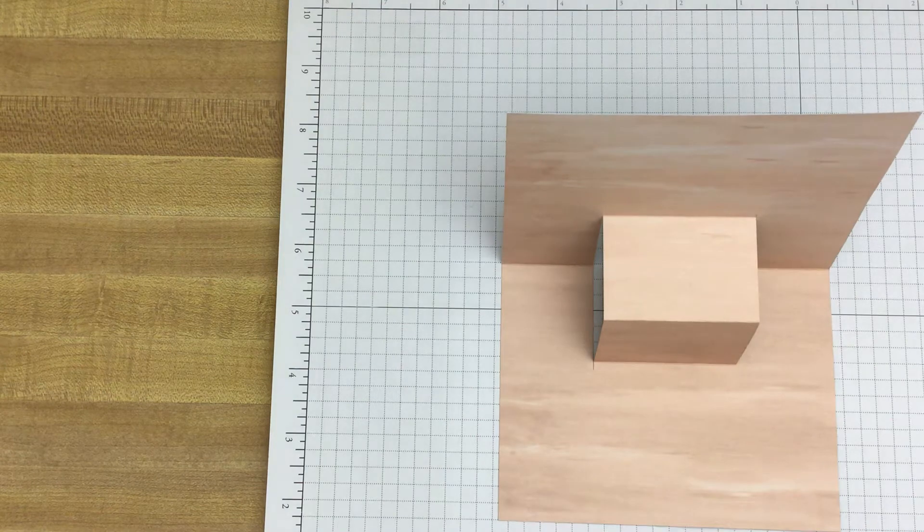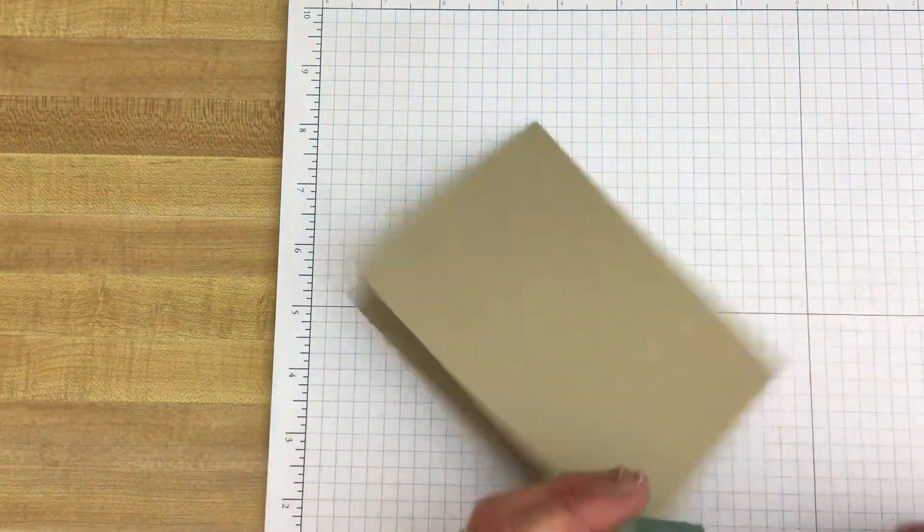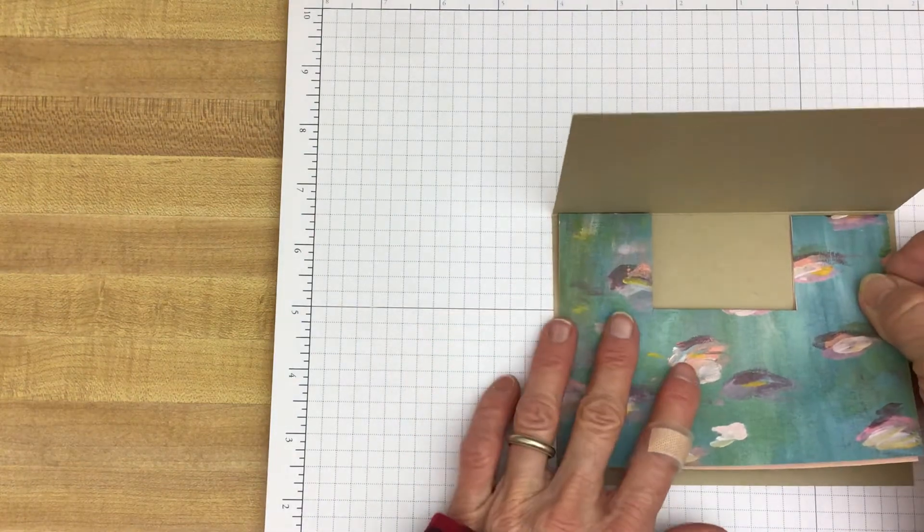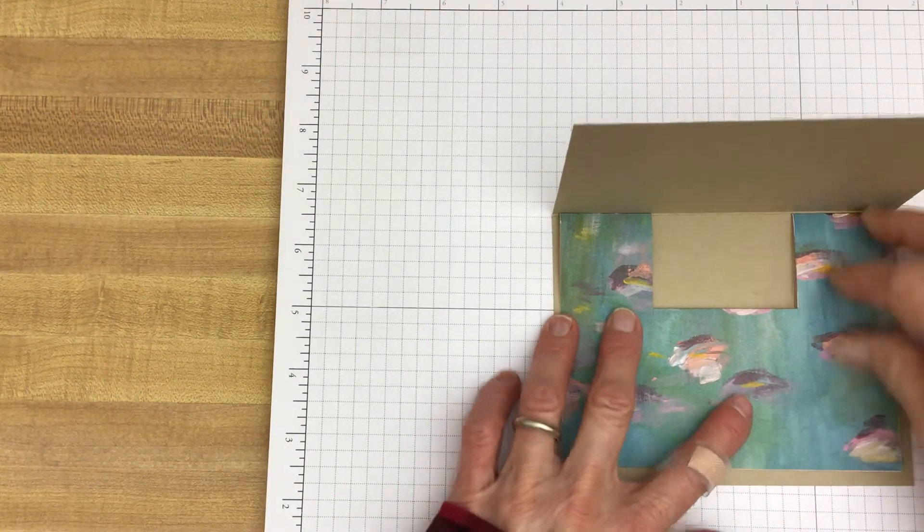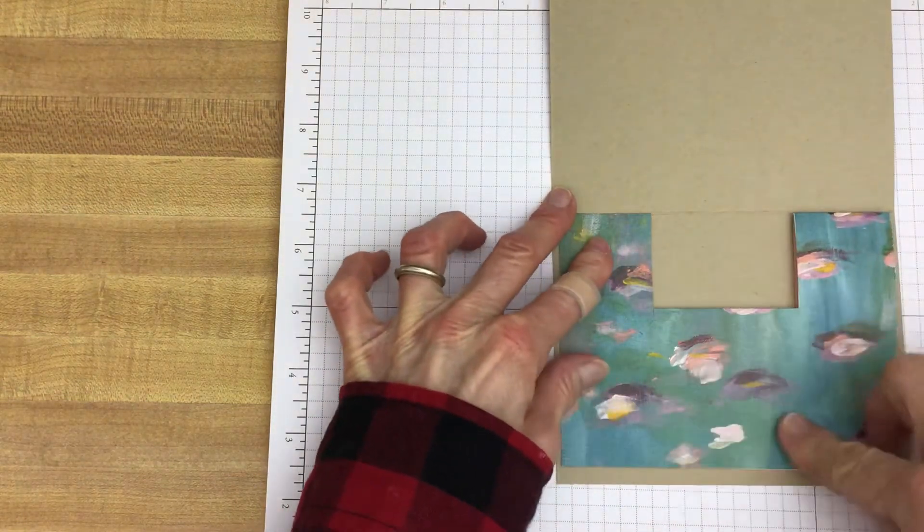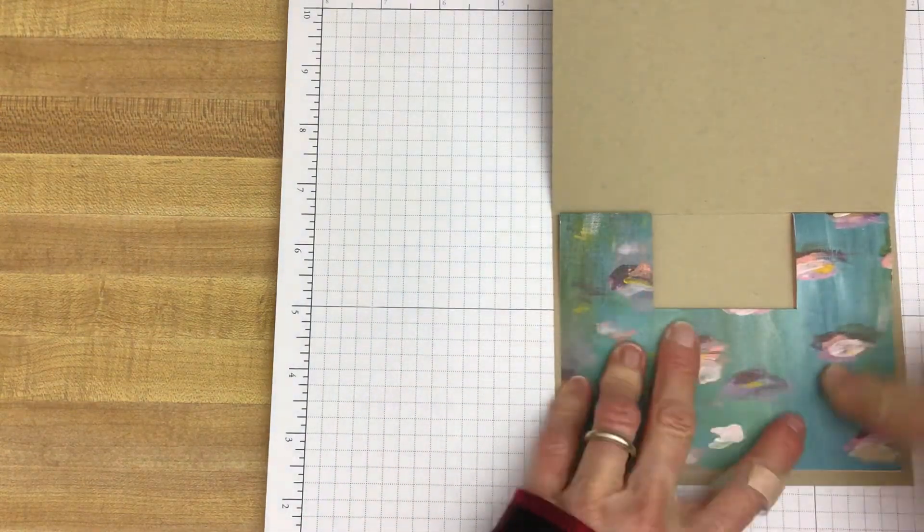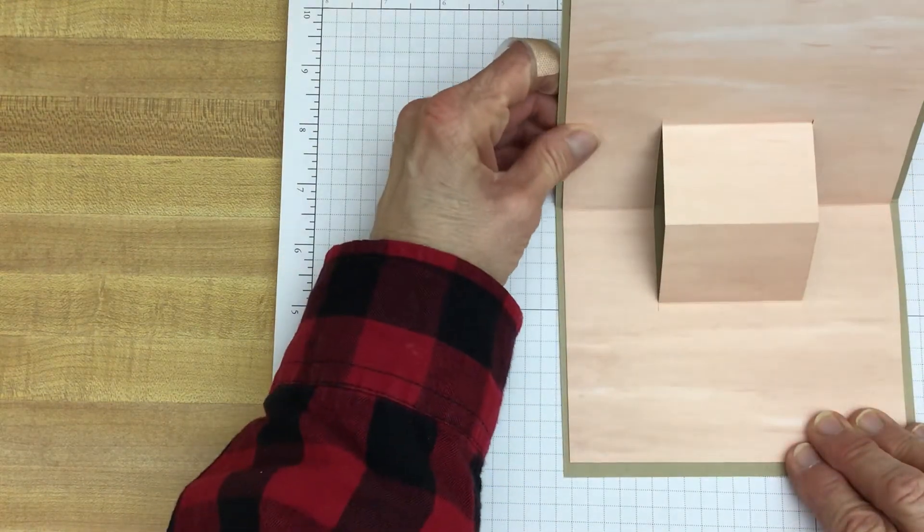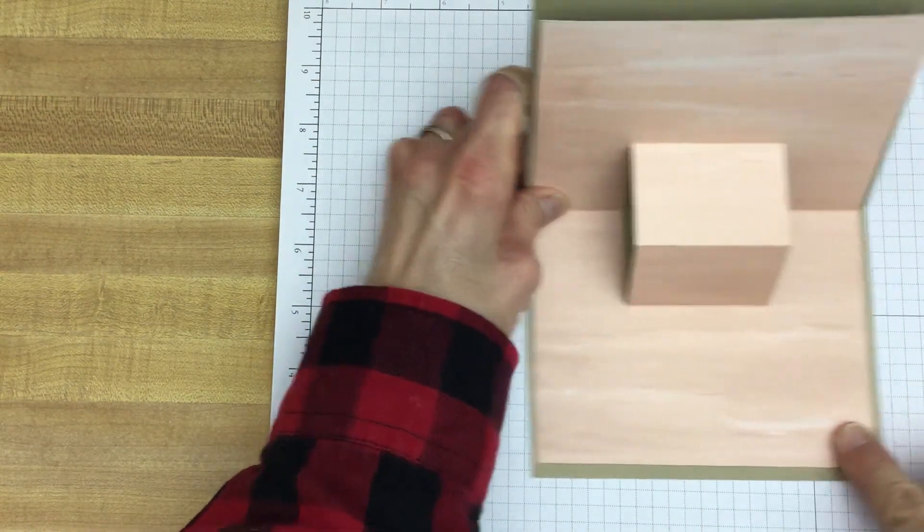And just like before, when you put it in your card, it's the exact same process. Center on the sides. You'll put your adhesive, close it up, and there you go. And then you would do the other side just the same way.